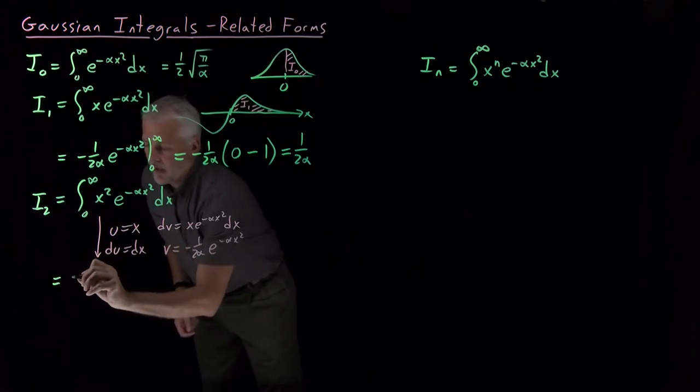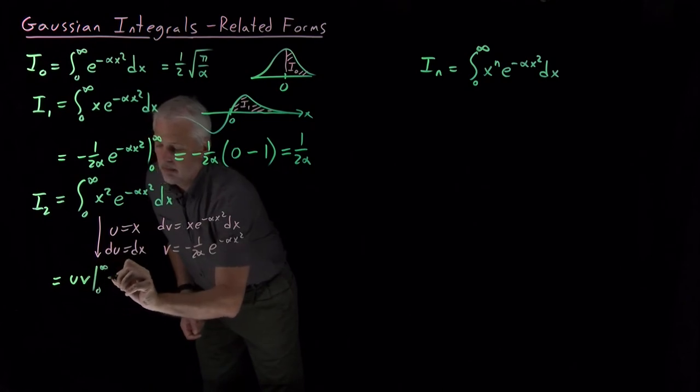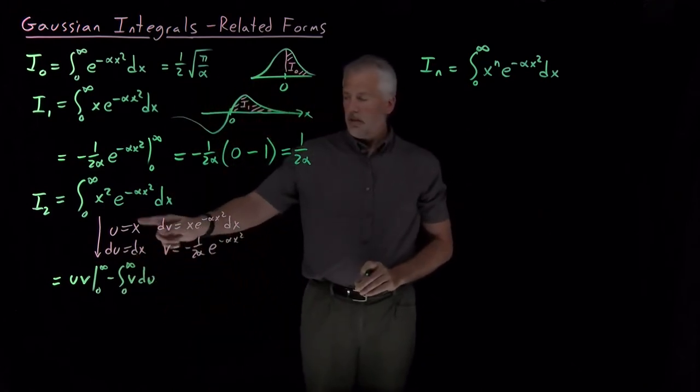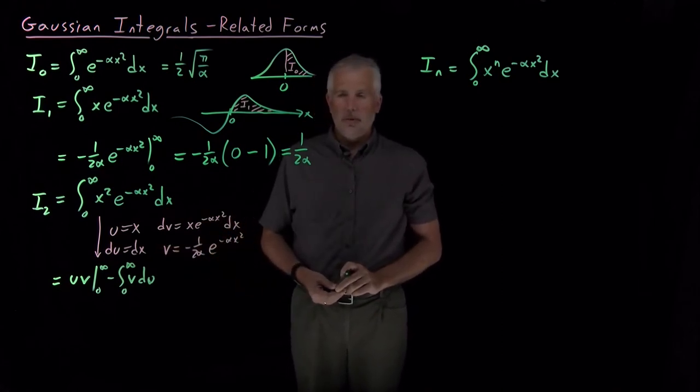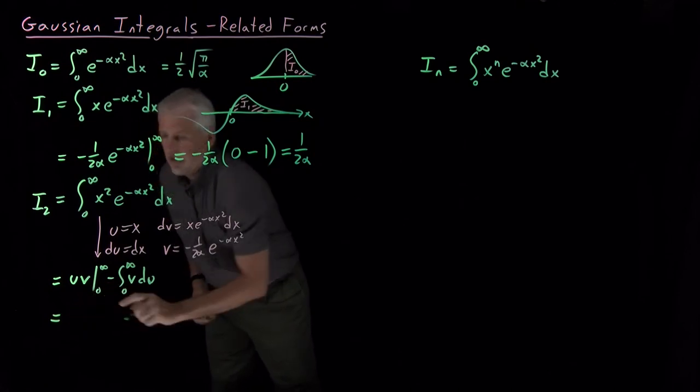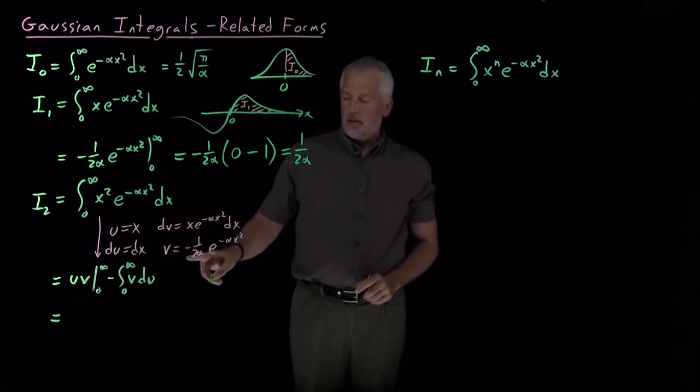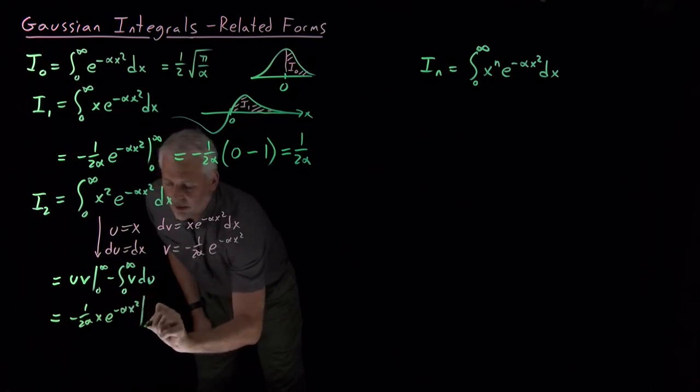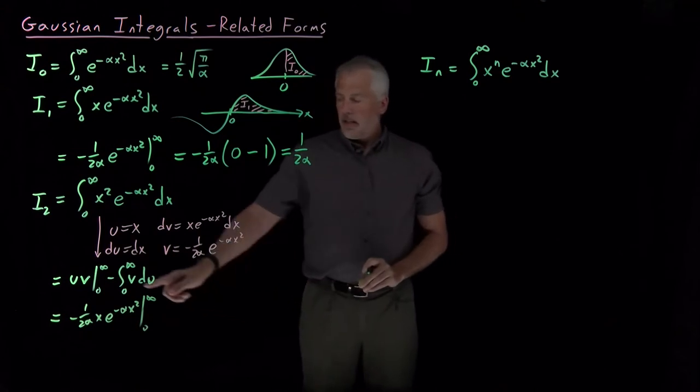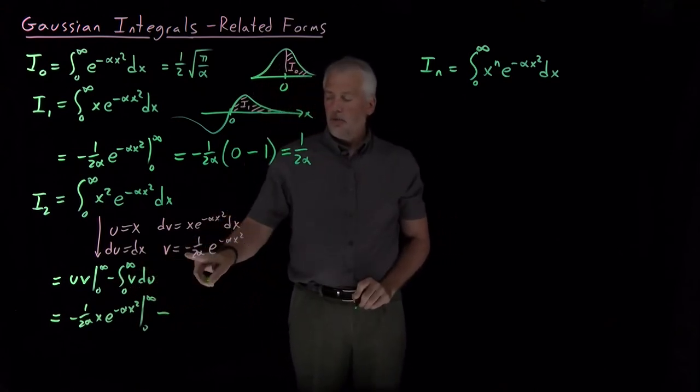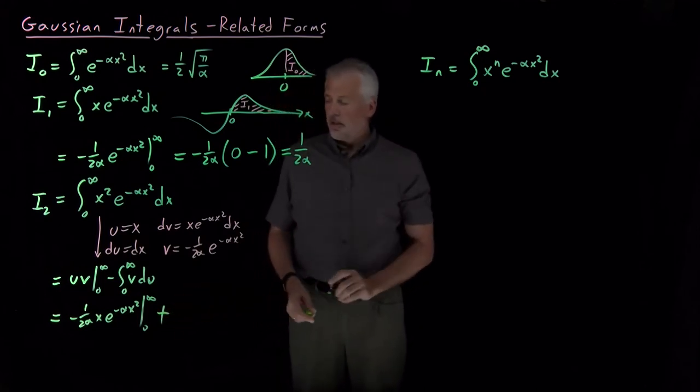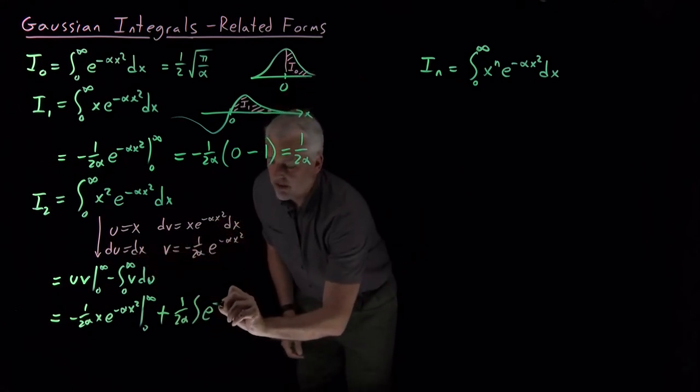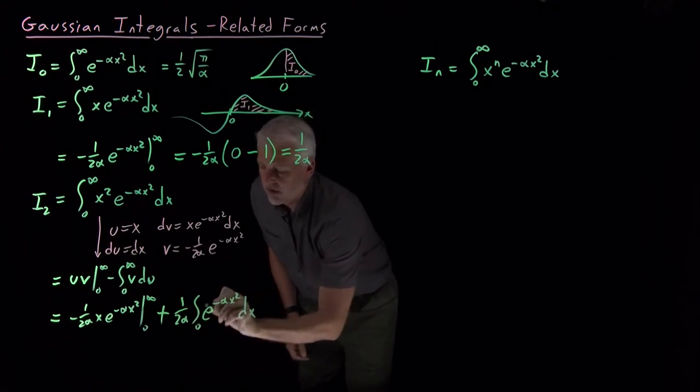Then those are the parts we need in order to do integration by parts. So this integral is going to be u times v minus the integral of v du. So I just need to insert the definitions I've chosen in choosing my u's and my dv's. And we find, so u times v, x times -1/(2α) and a Gaussian. So I've got -1/(2α) x e^(-αx²), evaluated between 0 and infinity. And then the minus integral of v du. V has a negative sign in it, so that minus becomes a plus. The 1/(2α) I can keep outside the integral, but I want the integral of v times du. So that's the integral of the Gaussian, again from 0 to infinity.